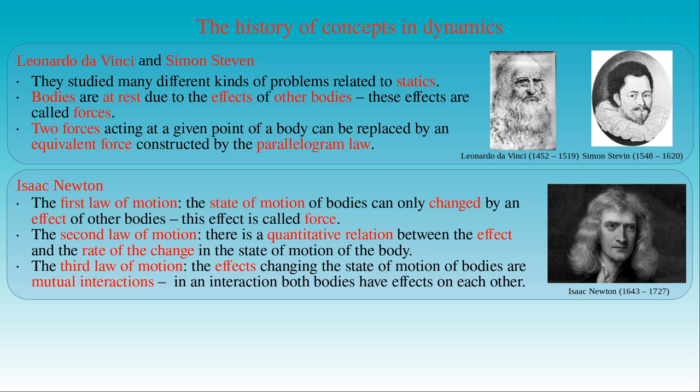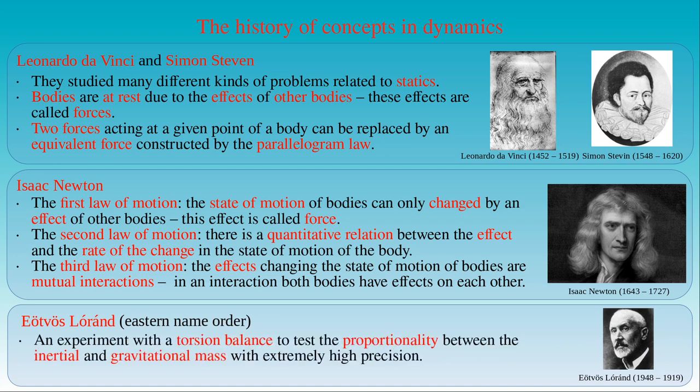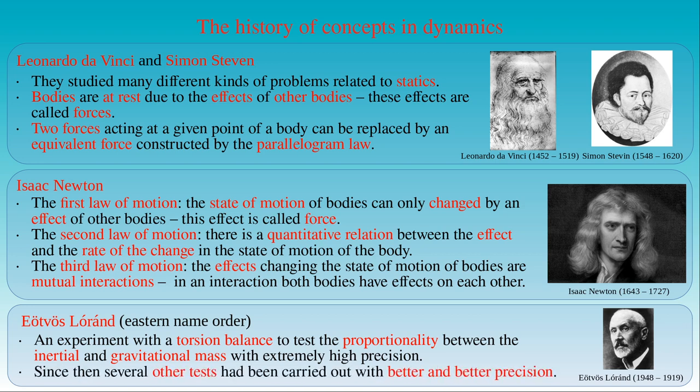These two types of masses have nothing to do with each other, but the universality of free fall demonstrates the equivalence principle stating that gravitational mass and inertial mass are equivalent. Eötvös was the first physicist who performed an experiment with a torsion balance to test the equivalence of gravitational and inertial mass with extreme accuracy. Since the first experiment, several other tests had been carried out, confirming the equivalence principle with better and better precision.